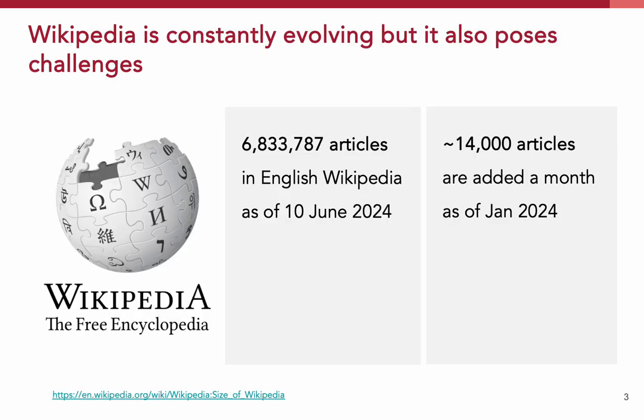Our kind Wikipedia community actively contributes to Wikipedia, ensuring it remains a dynamic and evolving platform. For instance, as of 10th of June this year, the English Wikipedia hosts over 6 million articles, with approximately 14,000 new articles added each month since January. While this growth is impressive, this also presents its own set of challenges.